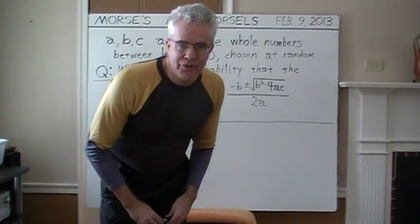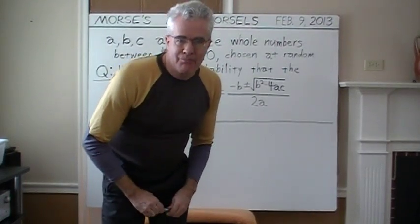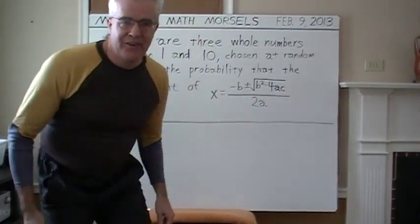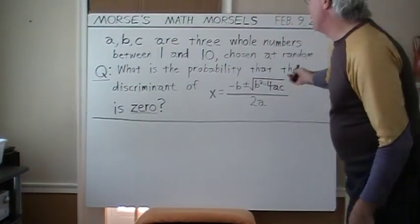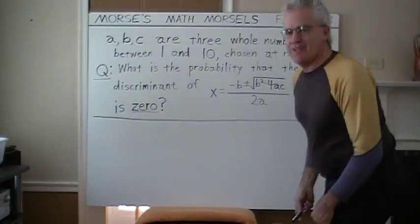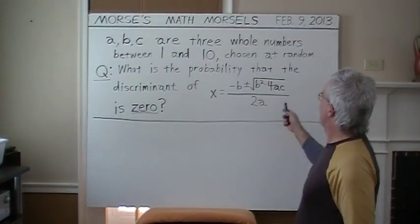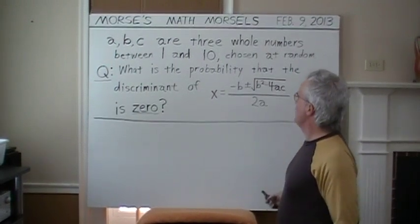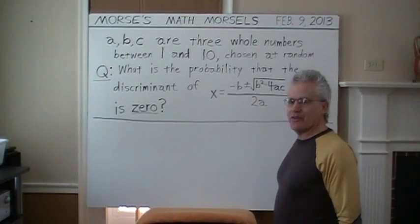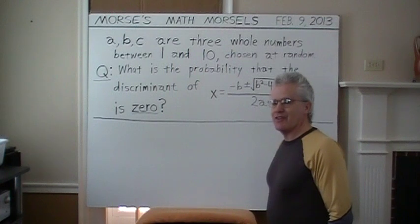Hello, and welcome to another of Morse's Math Morsels. This problem is: A, B, and C are three whole numbers between 1 and 10 chosen at random. The question is,